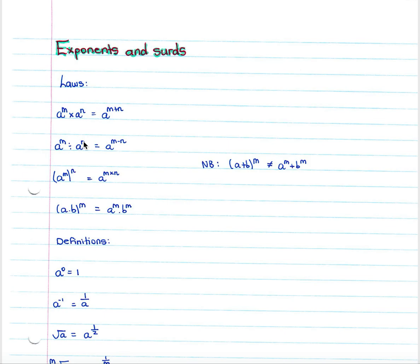So x cubed divided by x squared is x, because three minus two is one. If you have a variable with an exponent in a bracket raised to another exponent, the result is the variable raised to the first exponent times the second exponent. If you have (a times b) in a bracket raised to an exponent, you can distribute the exponent to each variable: a to the m times b to the m. Remember that (a + b) to the m does not equal a to the m plus b to the m — that is a common mistake and you cannot do that.